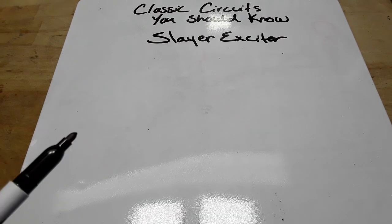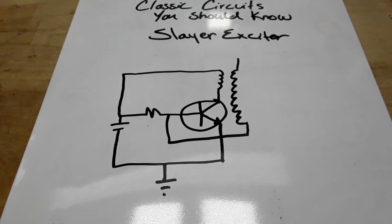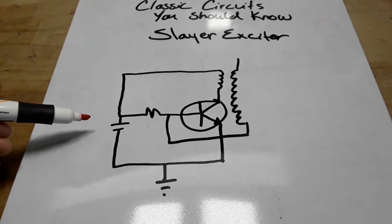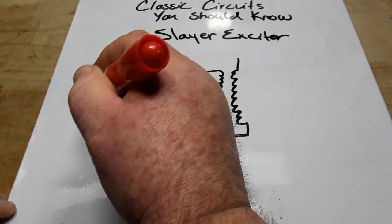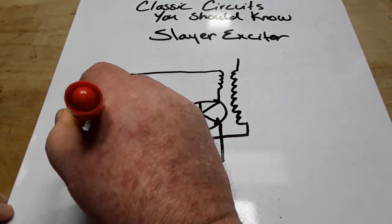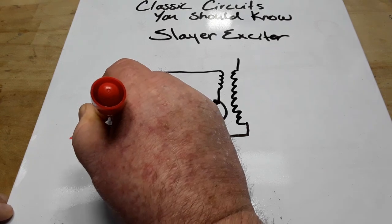So first of all, let me draw this up real quick for you. Alright, here's the basic circuit for the Slayer Exciter. We've got our power source over here, we'll call it 24 volts DC.